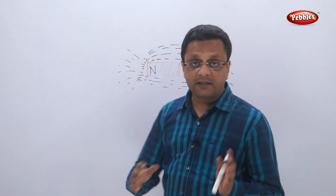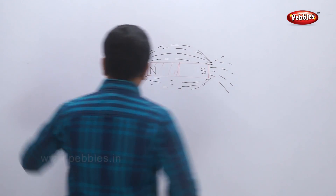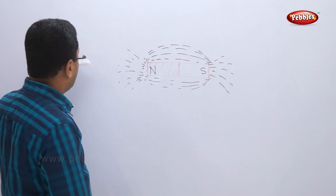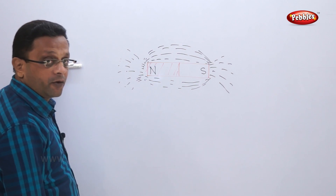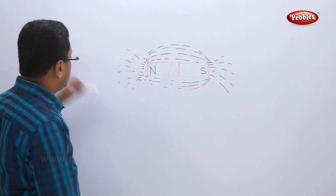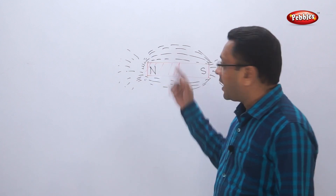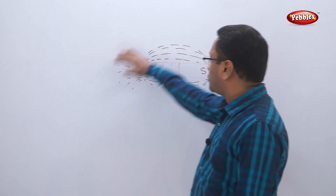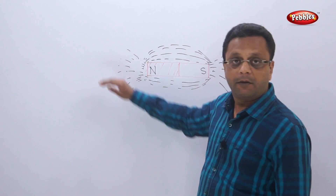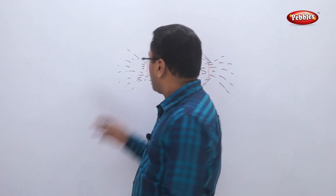These patterns are called lines of forces — they represent the field of attraction for the magnet. If a nail or any iron material is placed far away from the magnet, it may not get attracted, but as soon as it enters the magnetic field of that magnet, it will be attracted towards it.